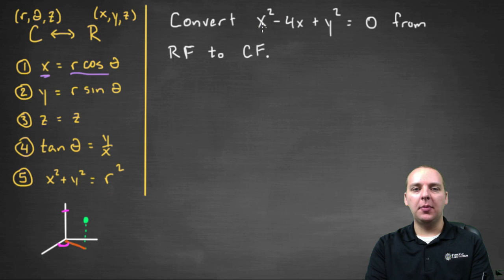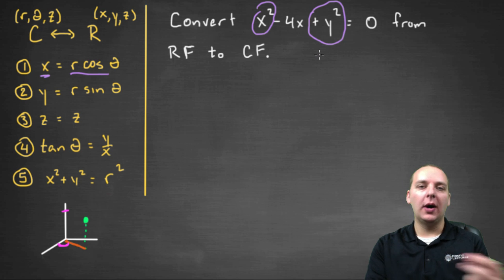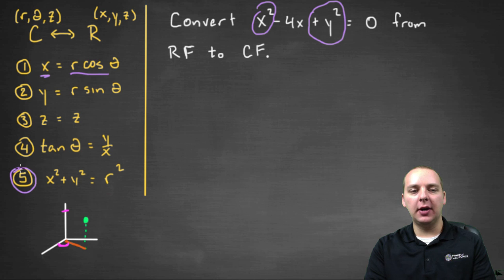When I look at this, I see x squared. One thing that catches my eye is x squared plus y squared. Why does that catch my attention? It's because of this conversion right here: x squared plus y squared is the same as r squared.